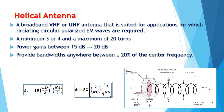Next, let's take a look at a helical antenna. A helical antenna is a broadband VHF or UHF antenna ideally suited for applications requiring circularly polarized electromagnetic waves rather than horizontal or vertically polarized waves. A helical antenna has a minimum of 3 or 4 turns and a maximum of about 20 turns. The more turns it has, the greater its gain. The power gain ranges between 15 to 20 decibels, and these antennas provide bandwidths anywhere between plus and minus 20% of the center frequency.